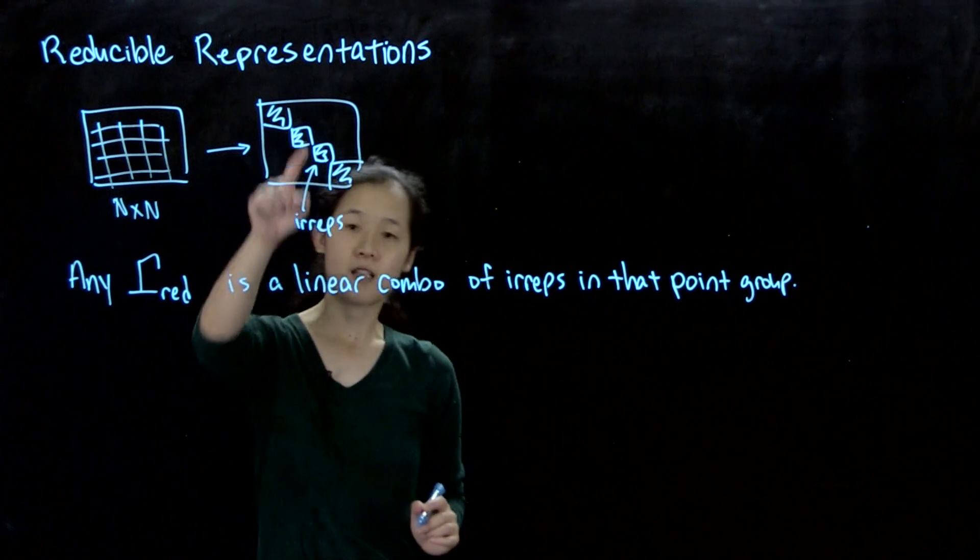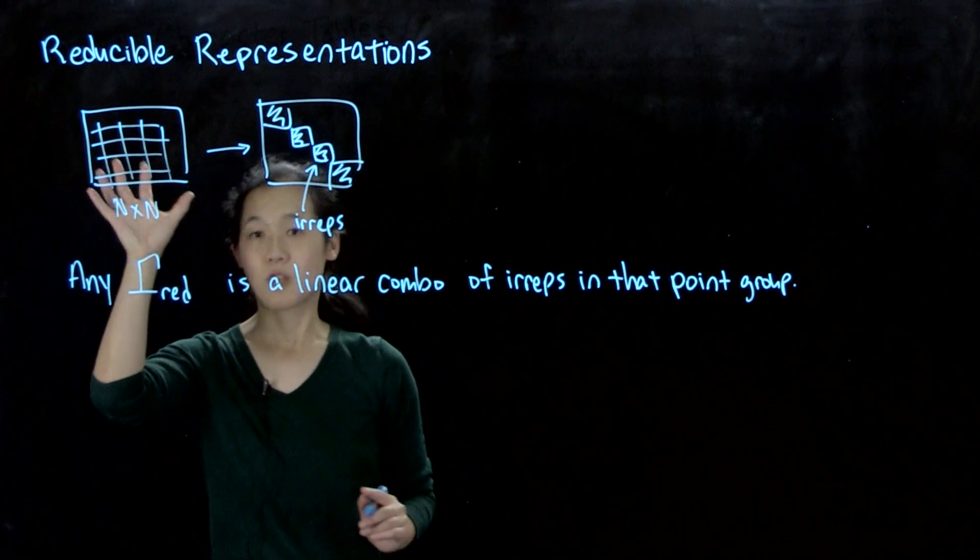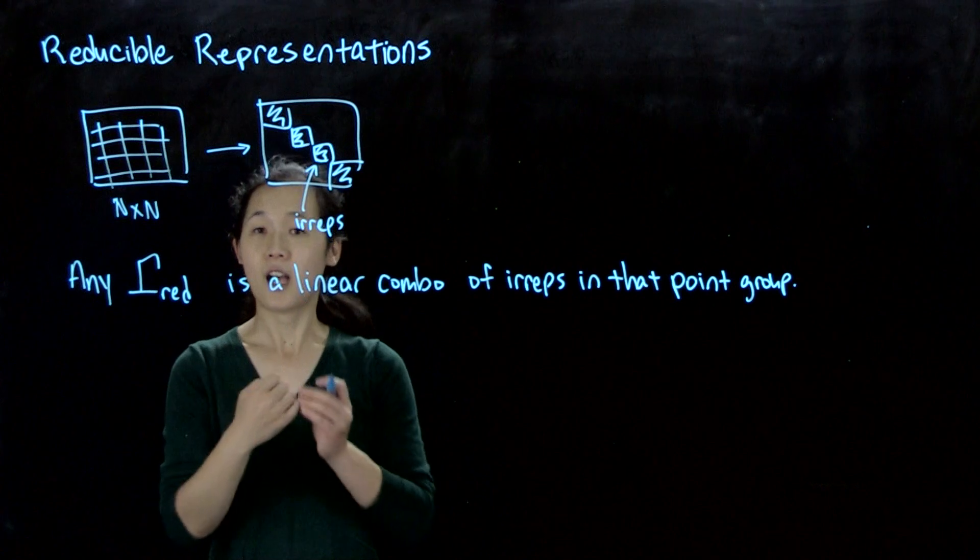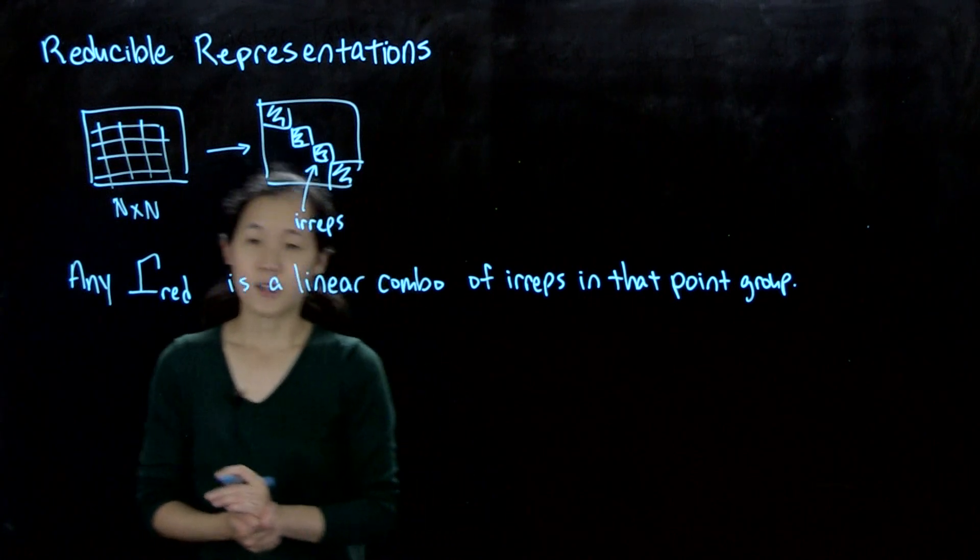Each of these irreps that make up the block diagonalized reducible representation can be found as a row in a character table for that point group. So let's give an example.